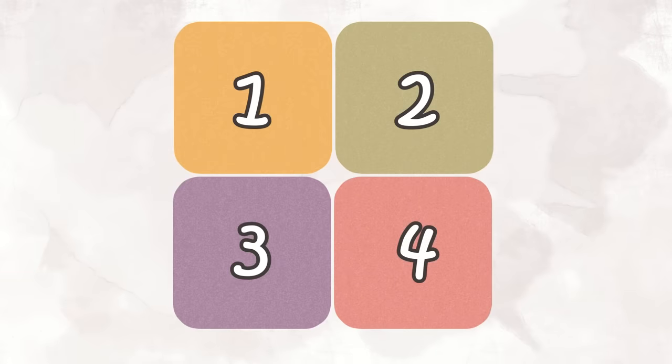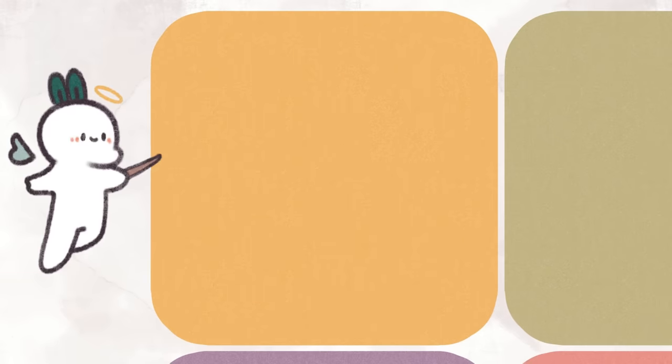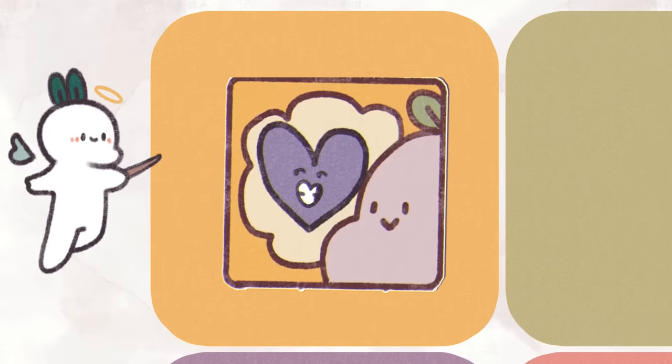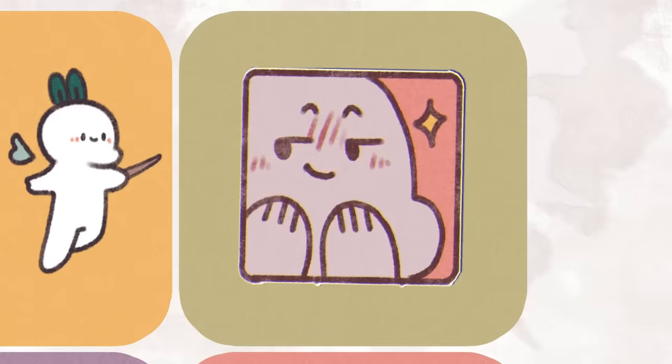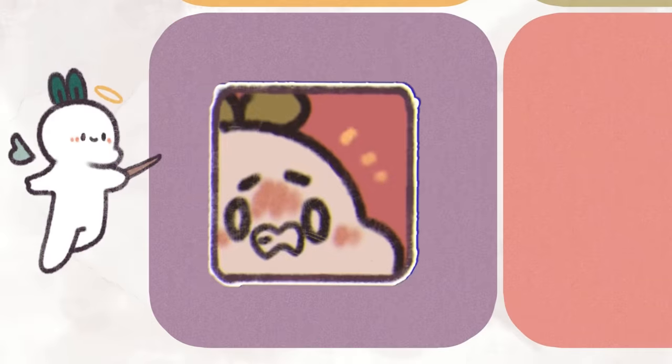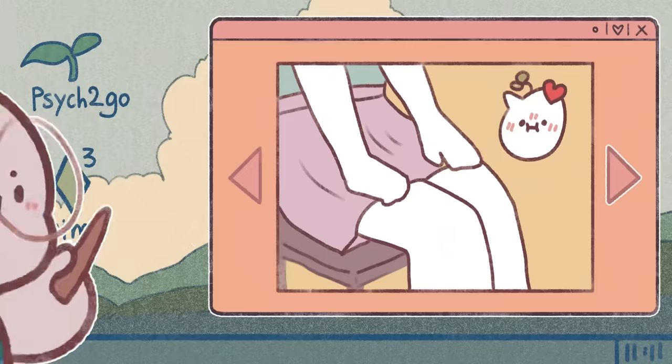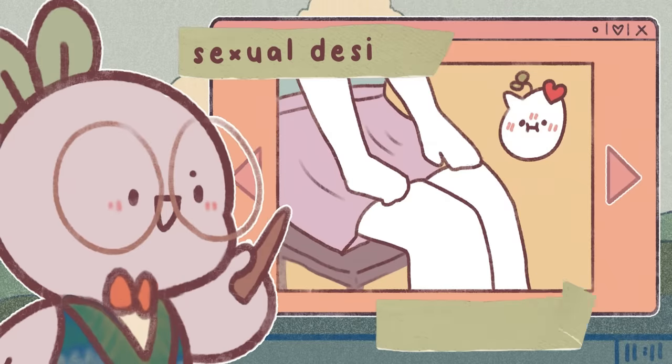Sexual dysfunctions usually fall under four major categories: disorders of sexual desire, interest, arousal, orgasm, and sexual pain. However, the most common ones deal with sexual desire and arousal.